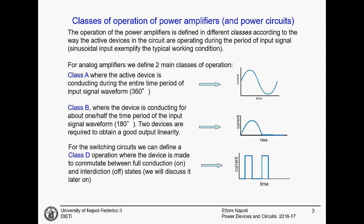Then there are class C, class E, and many other classes of circuits, but we will focus on class D operation amplifiers, in which the device is not working in linear operation but is switching between full conduction — the on state, when maximum current is flowing through the device — and the off state, when zero current is flowing. Class A, B, and D amplifiers will be discussed.